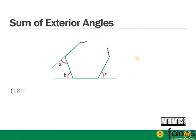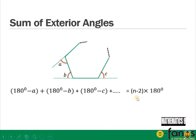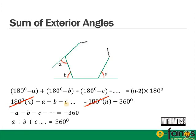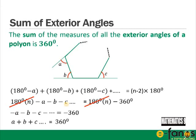We can do the same for an n-sided shape: n × 180 − (a + b + c + ...) = (n − 2) × 180, so 180n − (a + b + c + ...) = 180n − 360, and the 180n terms cancel, giving a + b + c + ... = 360. The sum of the measures of all exterior angles of any polygon is always 360 degrees.